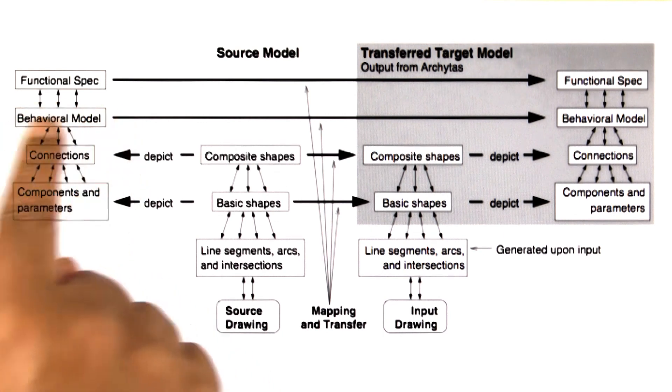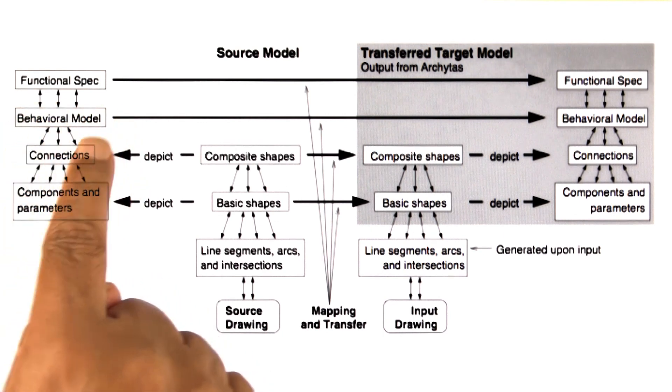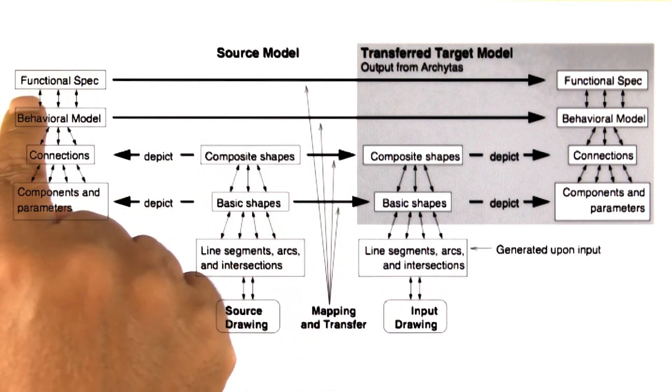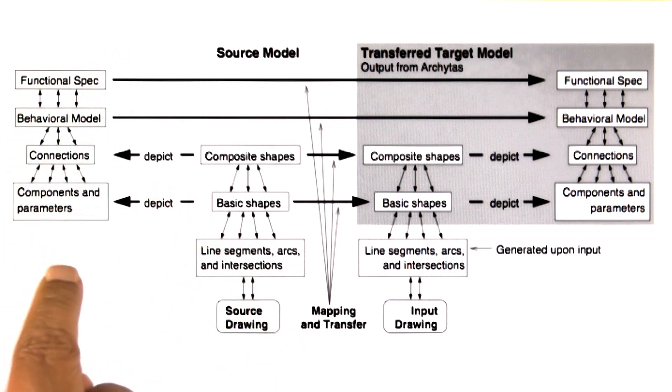Then a behavioral model or a causal model, which said what happens when the piston moves in and out, namely the crankshaft turns. And then a functional specification, which said that this particular system converts linear motion into rotational motion. So there was a lot of knowledge associated with each previous drawing that Archytos already had seen. All of this knowledge was put into a library.